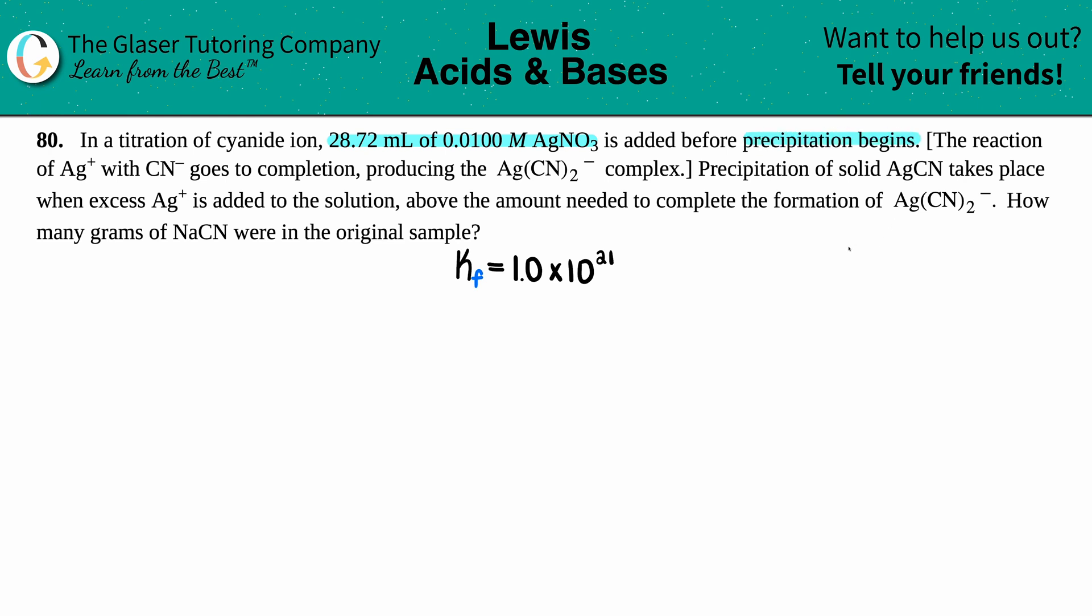The reaction of Ag plus with CN minus goes to completion producing the AgCN2 minus complex. Precipitation of the solid AgCN takes place when excess Ag plus is added to the solution above the amount needed to complete the formation of AgCN2 minus. How many grams of NaCN were in the original sample?